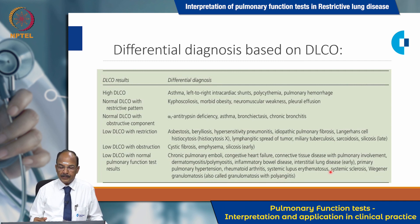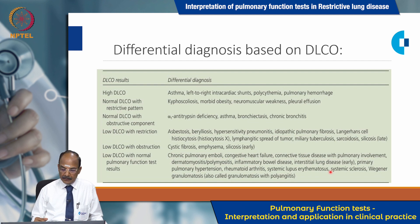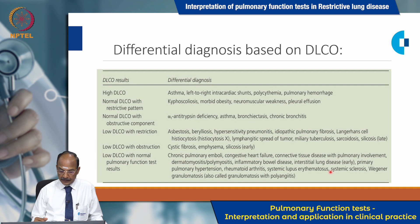Based on DLCO, how to interpret pulmonary function? High DLCO scenarios include asthma, left-to-right intracardiac shunts, polycythemia, or pulmonary alveolar hemorrhage. Normal DLCO with restrictive pattern could be due to extrinsic causes like kyphoscoliosis, morbid obesity, neuromuscular weakness, and pleural effusion. Normal DLCO with obstructive component: think of alpha-1 antitrypsin deficiency, bronchial asthma, bronchiectasis, or chronic bronchitis. Low DLCO with restrictive lung function: consider asbestosis, berylliosis, or other parenchymal lung damage. Low DLCO with obstructive pattern: consider cystic fibrosis, emphysema, and early silicosis. Low DLCO with normal PFT results: think of vascular causes, chronic pulmonary emboli, congestive heart failure, connective tissue diseases, dermatomyositis/polymyositis, early stages of ILD, or pulmonary hypertension.